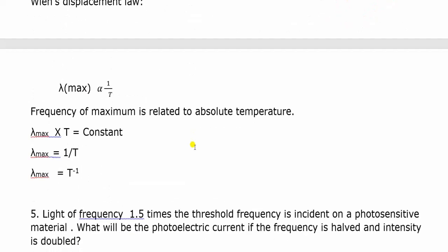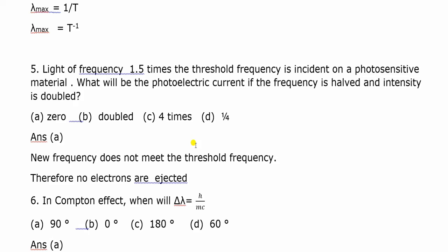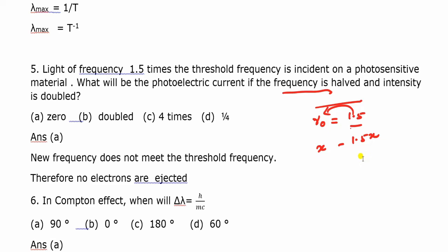Question number 5: Light of frequency 1.5 times the threshold frequency is incident on a photosensitive material. What is the photoelectric current if the frequency is halved and the intensity is doubled? If the threshold frequency is x, current frequency is 1.5x. When halved, the new frequency becomes 0.75x.